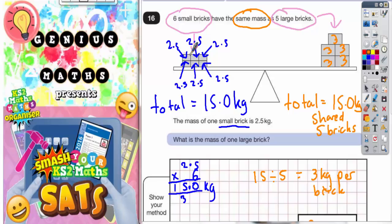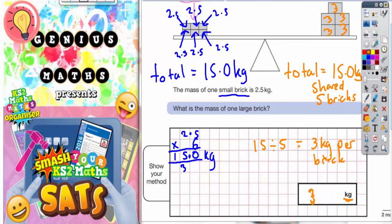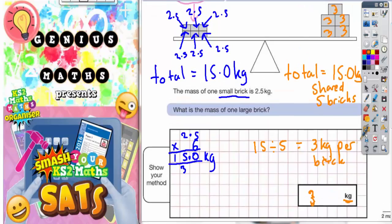So each small brick is 2.5, and 6 lots of 2.5 makes 15. And each large brick is 3, and 5 lots of 3 also makes 15. So the final answer, the mass of one large brick is 3 kilograms. Correct.